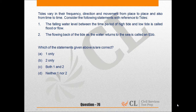Statement 2 is correct while Statement 1 is wrong, because it was not the falling water level — the rising water level between the time period of high tide and low tide is called flood or flow. So Statement 1 is wrong, and out of the four options given, option D is the correct one: 2 only.